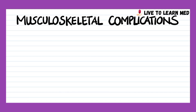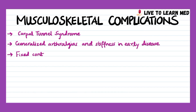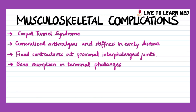Musculoskeletal complications include carpal tunnel syndrome, generalized arthralgias and stiffness in early disease, fixed contractures at proximal interphalangeal joints, and bone resorption in terminal phalanges leading to loss of distal tufts, known as acro-osteolysis.